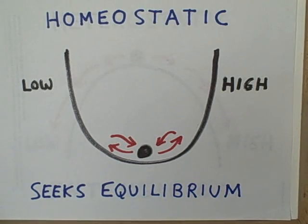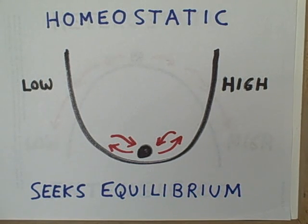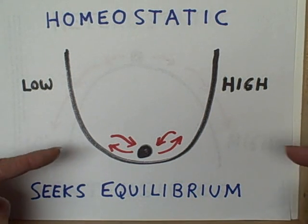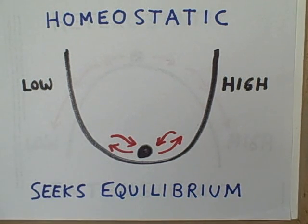One kind of algorithm is homeostatic. This kind of algorithm always tries to bring us back to the equilibrium point — not too high, not too low, but stability in the middle.